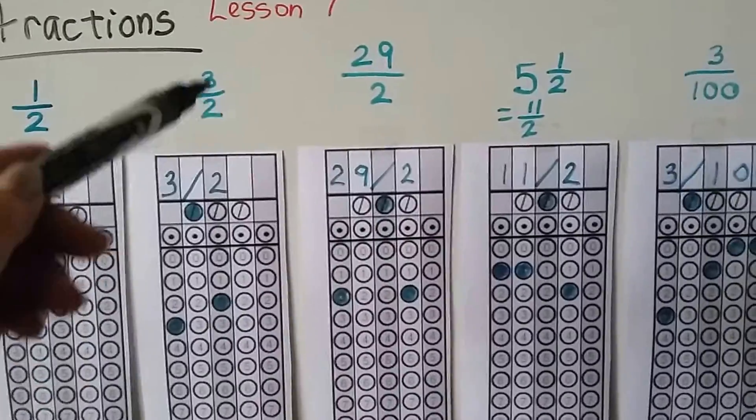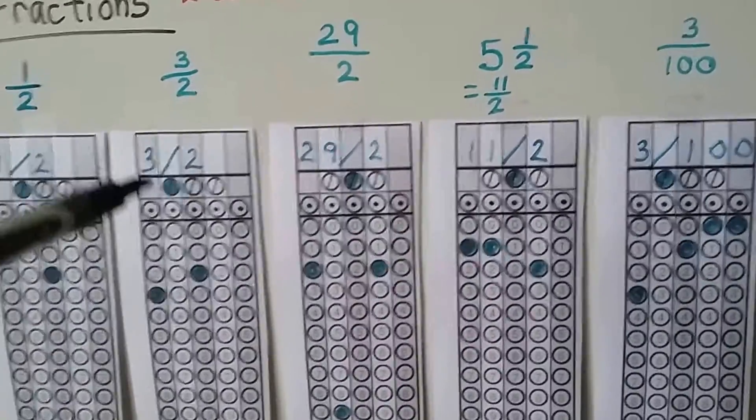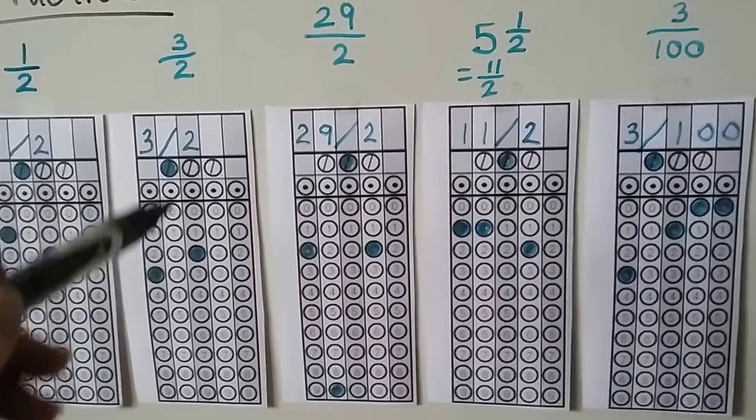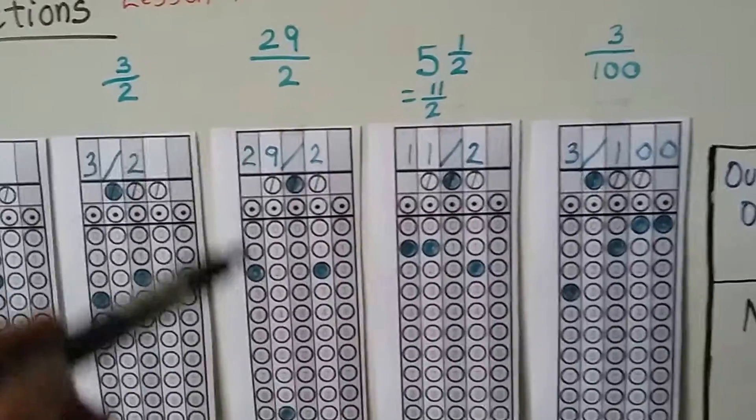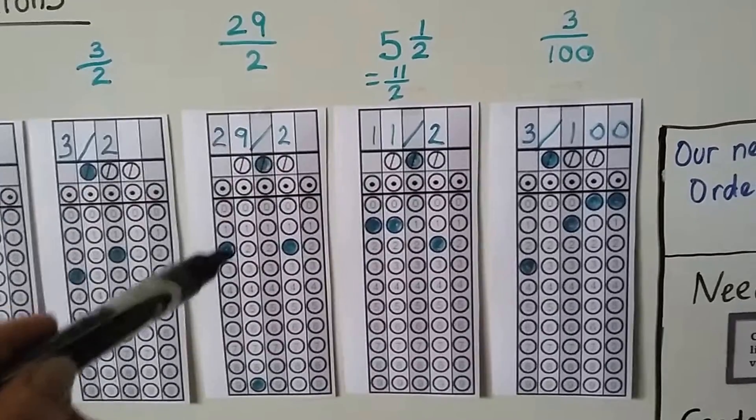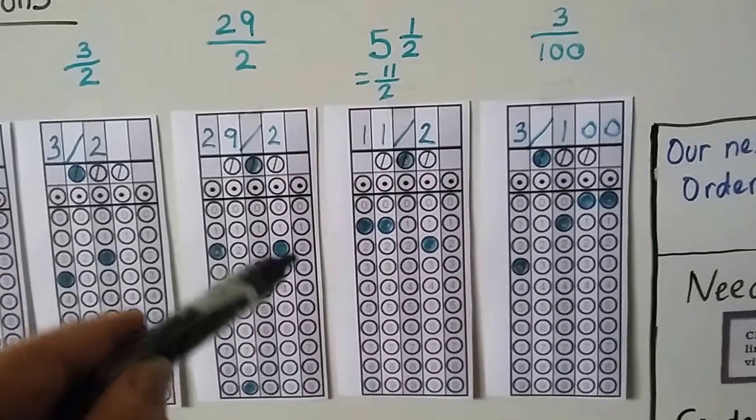We have 3/2. Yeah, the numerator can be larger than the denominator. It's an improper fraction. We put the 3, then the slash, then the 2. That's how we fill in the bubbles. Same thing with 29/2. 2, 9, slash, 2. We fill in the 2, the 9, the slash, and the 2.